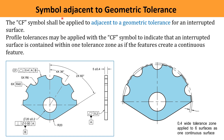There is also a possibility to apply a CF symbol adjacent to a geometric tolerance for interrupted surfaces. The following is an example of surface profile: an interrupted feature with N number of features has a profile tolerance applied with a CF symbol to indicate that the interrupted surface is contained within one tolerance zone, as if the features create a continuous surface. When the CF symbol is applied near the feature control frame, all surfaces must be treated as one single feature with a single tolerance zone — for example, a tolerance of 0.4 applied to all six surfaces as shown in the drawing.